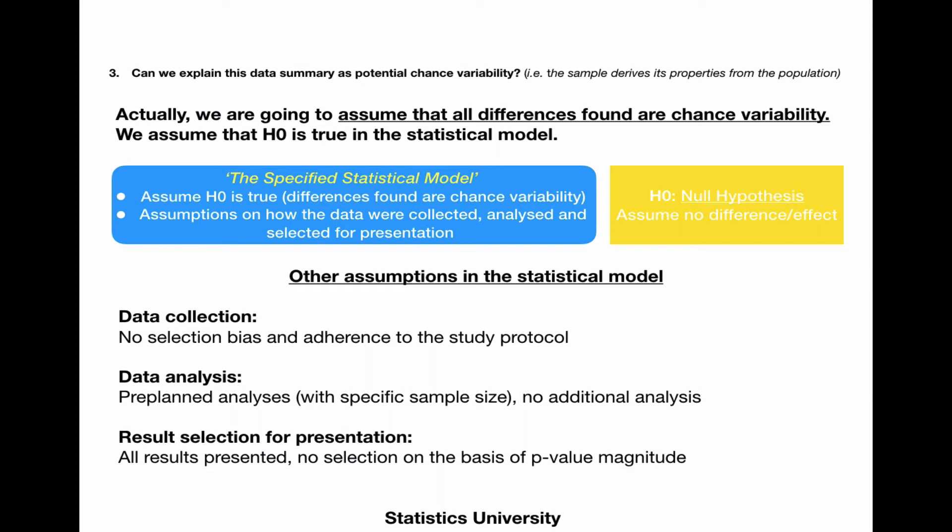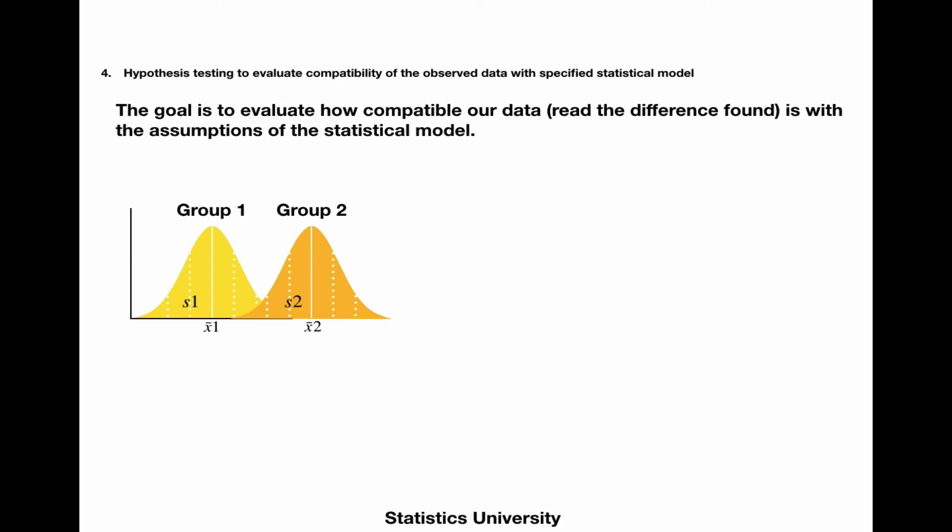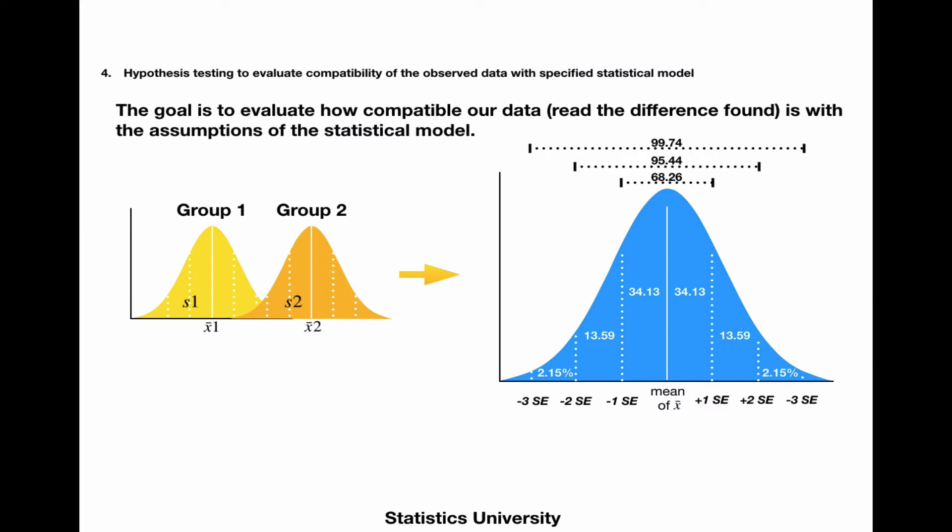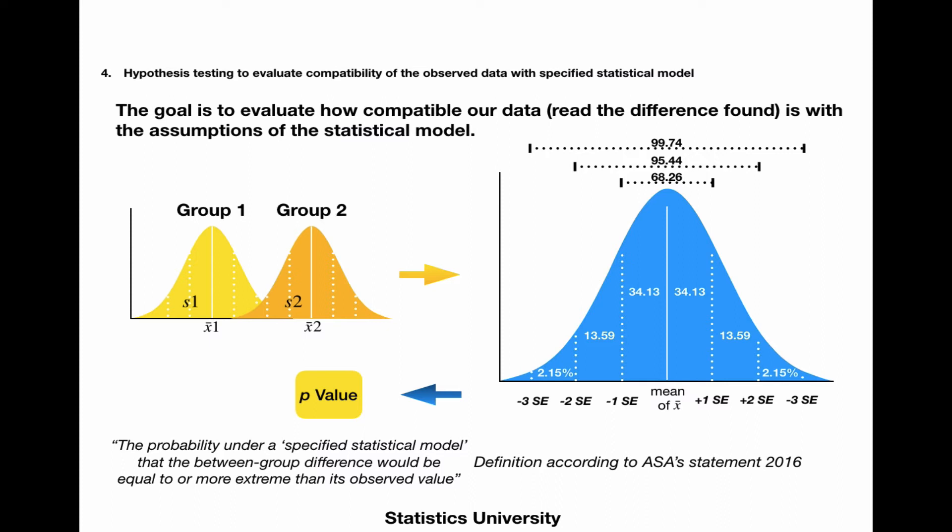As we've stated, we're going to use hypothesis testing to evaluate the compatibility of the observed data with the specified statistical model by comparing groups. Then we're going to look at the between-group difference and the associated standard error. We're going to look up that standard error in the standard normal distribution table, and we're going to calculate a p-value with the definition of probability under a specified statistical model that the between-group difference would be equal to or more extreme than its observed value.